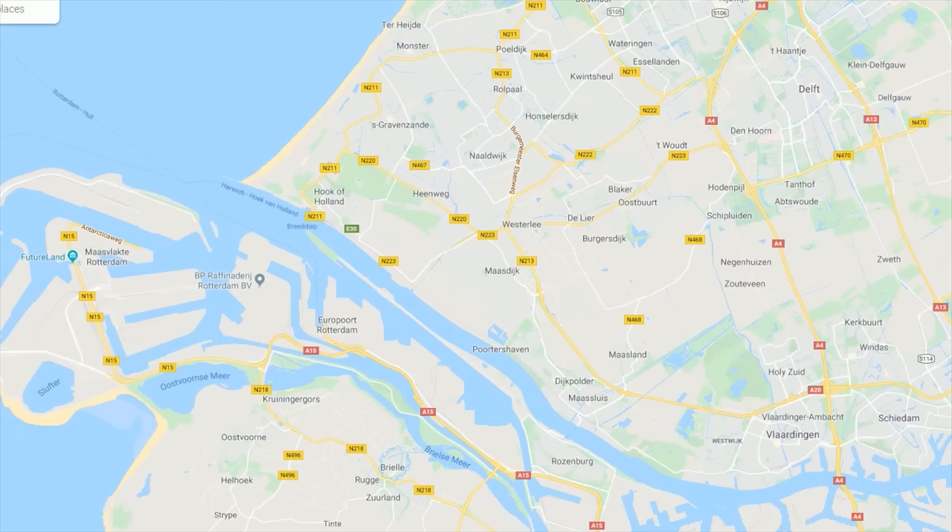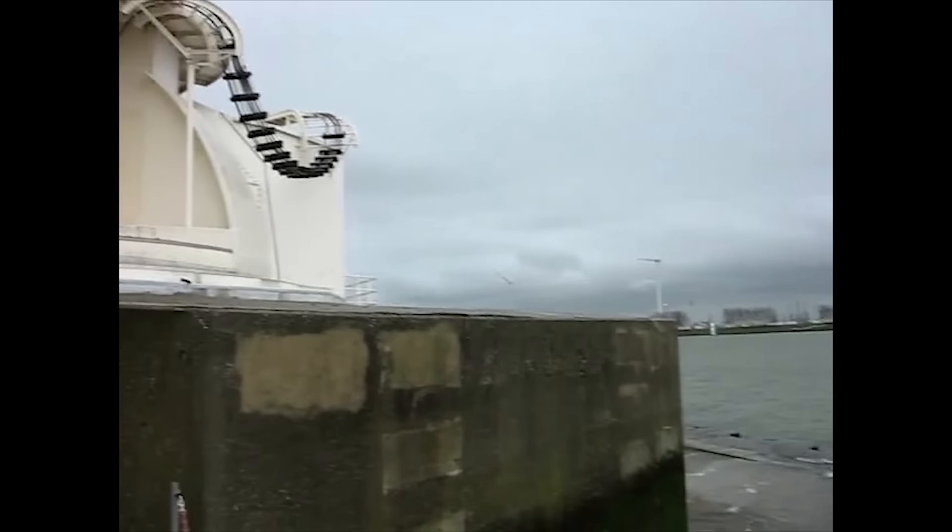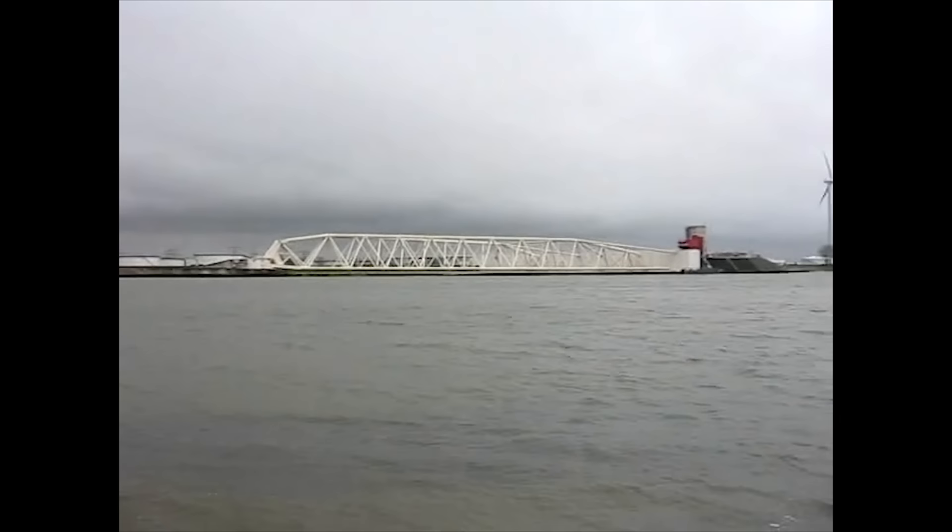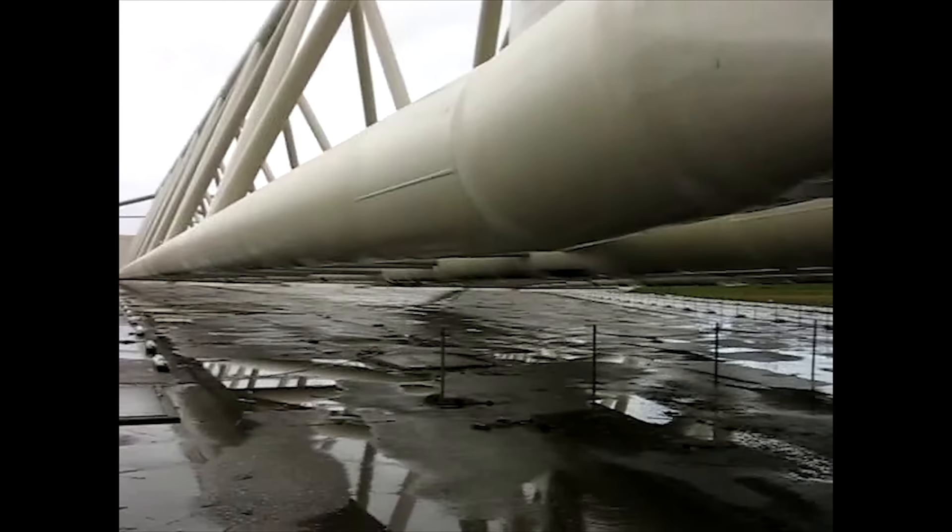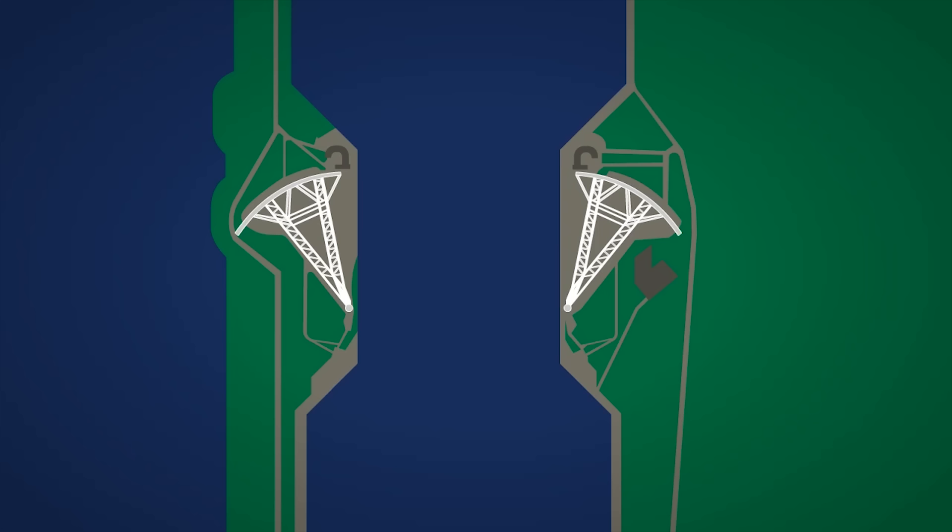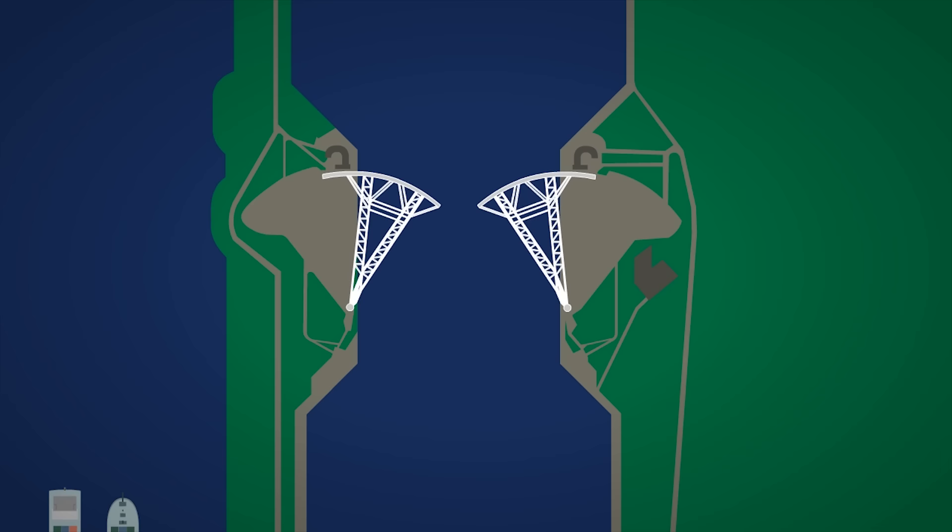This storm barrier is one of the largest moving objects ever created by humanity. It had to be built piecemeal and assembled on site. Due to the size of the individual pieces, the company had to hire several specialist contractors to get the massive parts they needed. There would be two barriers, one on each side of the river. They were designed to rotate, so that when there was a flood risk, they would slide the two barriers onto the river where they would meet in the middle.